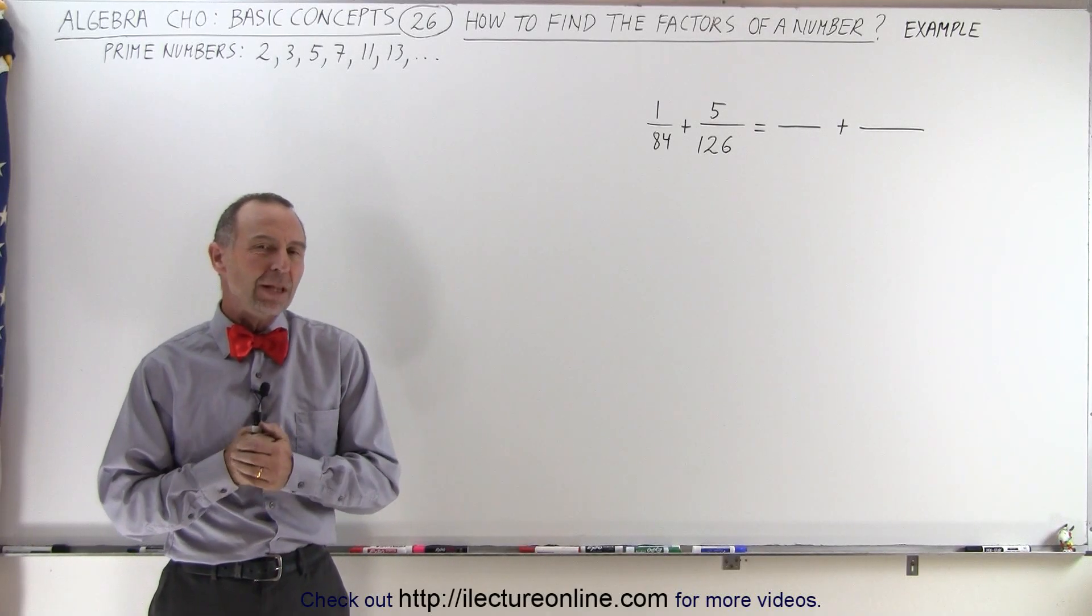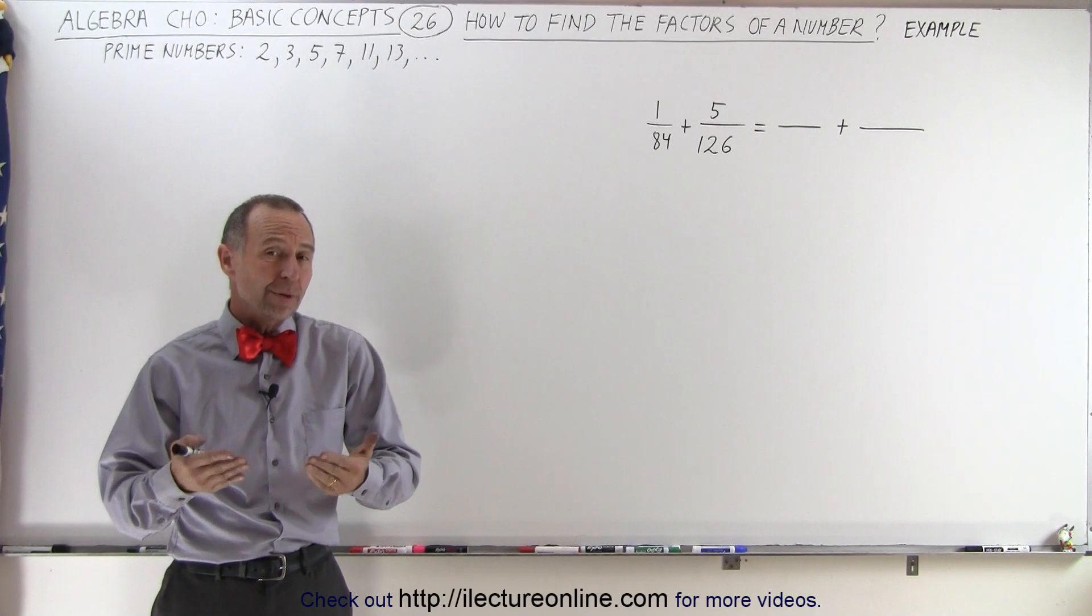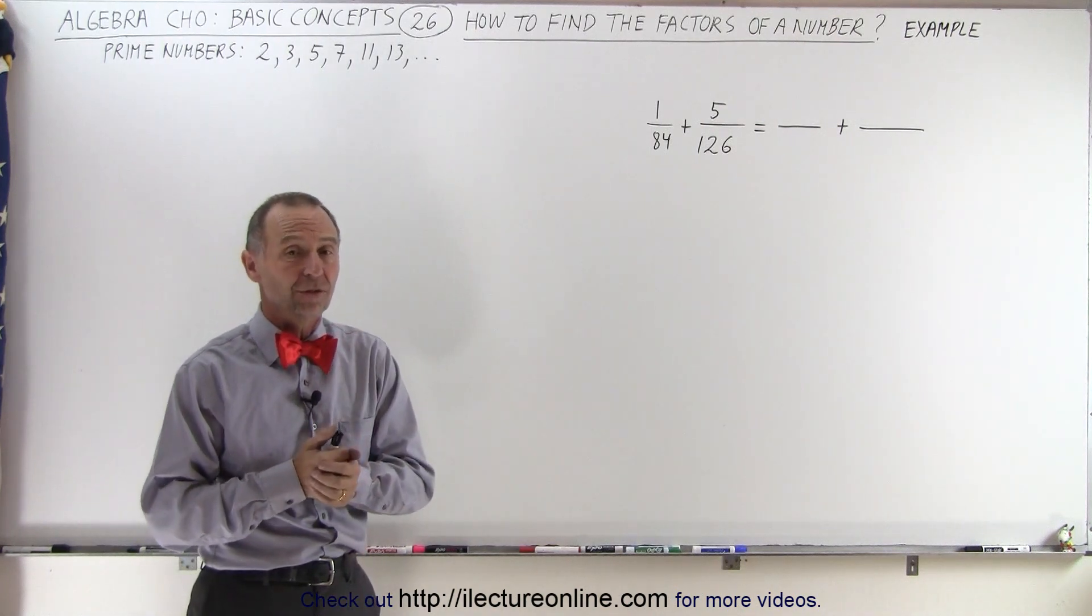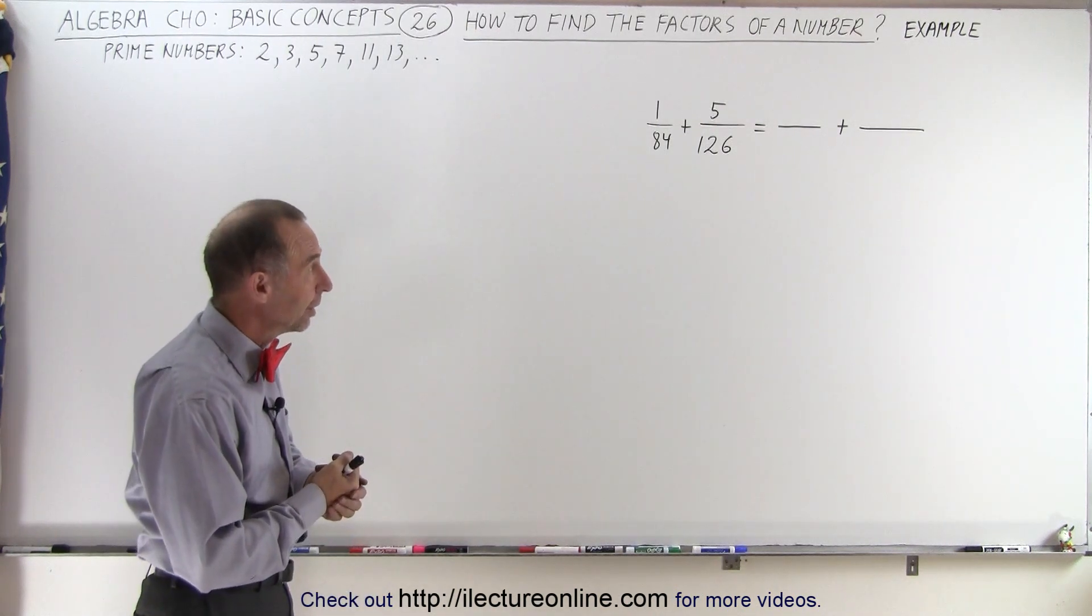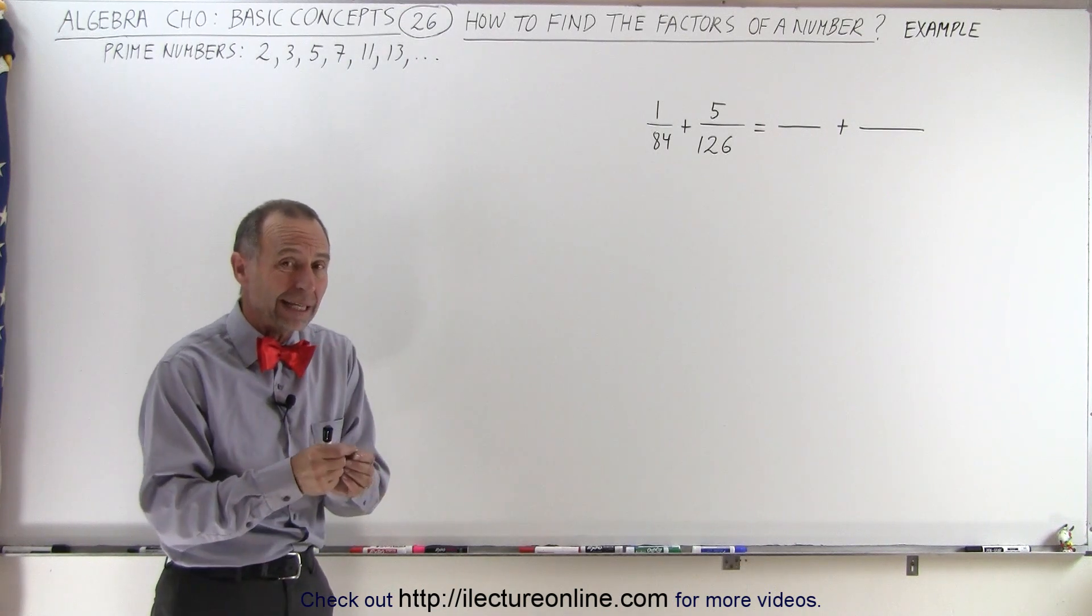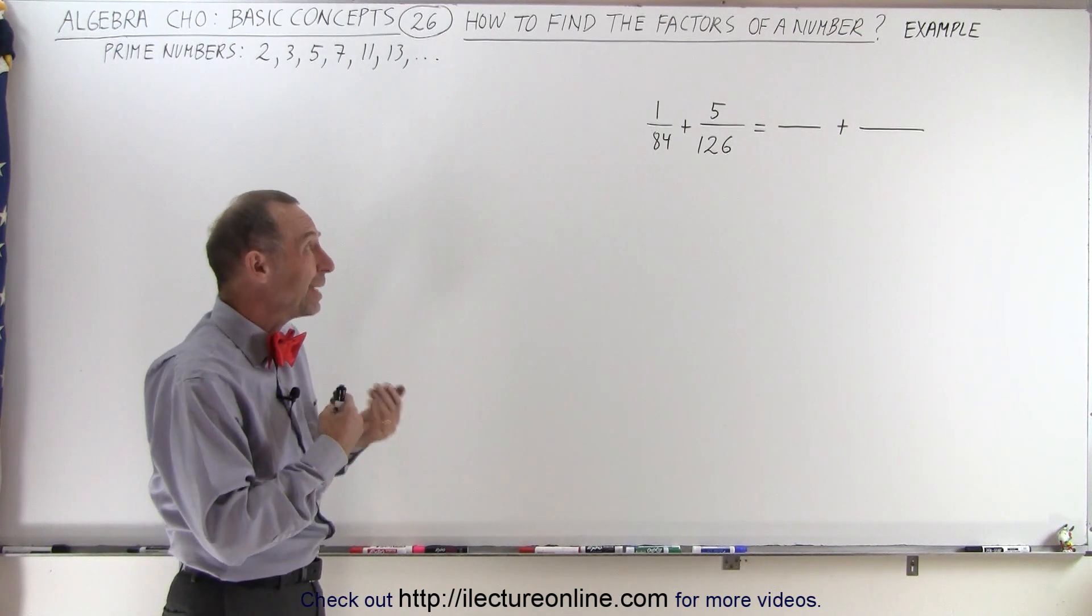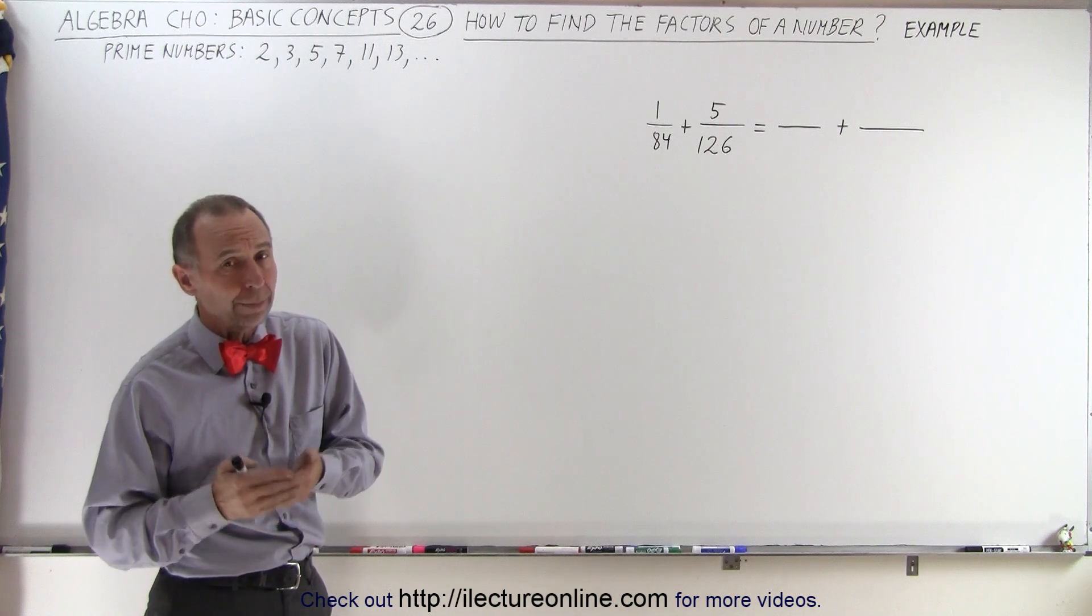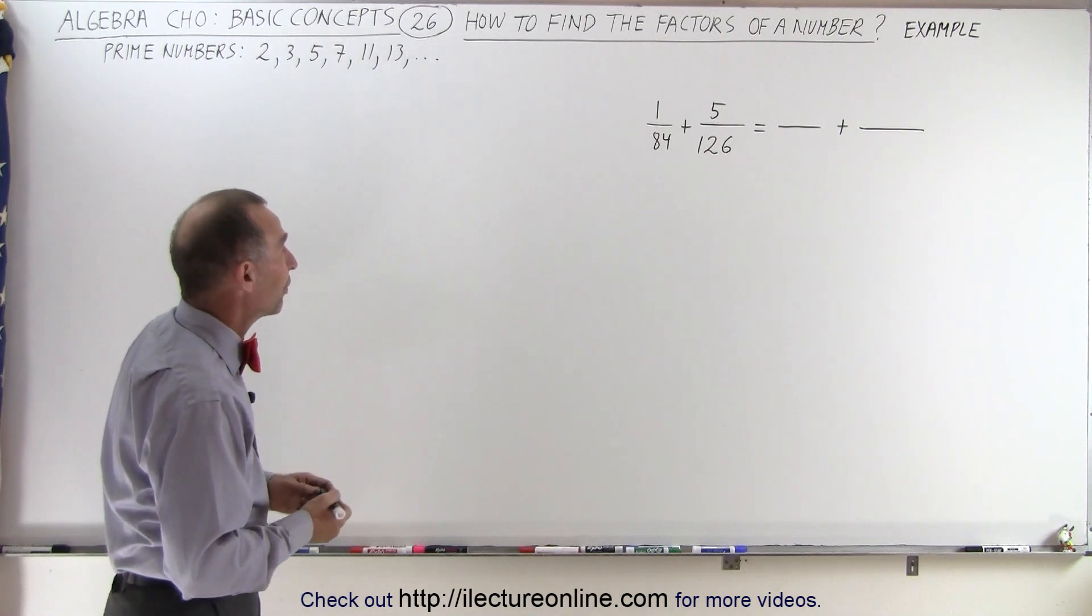Welcome to ElectronLine. Let's use the technique from the previous video to add these two fractions. They don't have the same denominator. Multiplying the two fractions to get a common denominator would give us a really big denominator, so we're going to find the lowest common denominator using the method we learned.